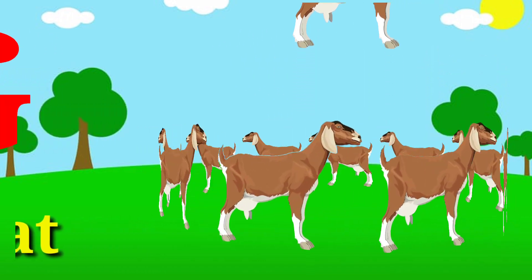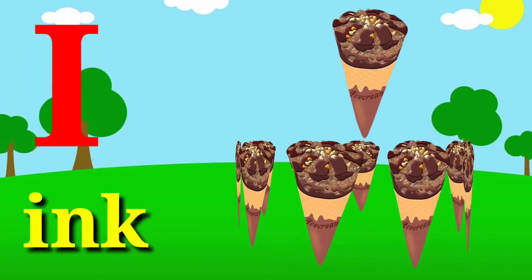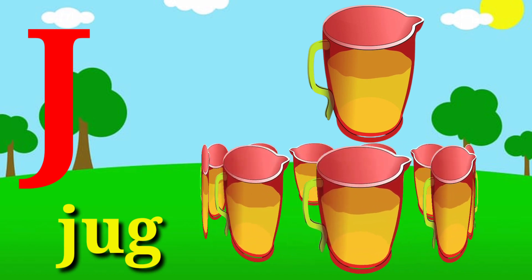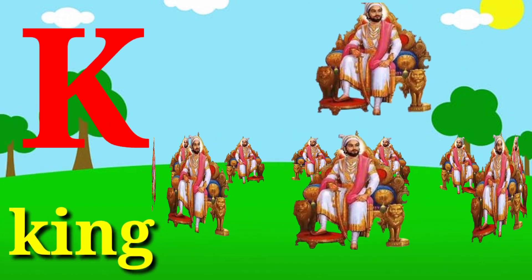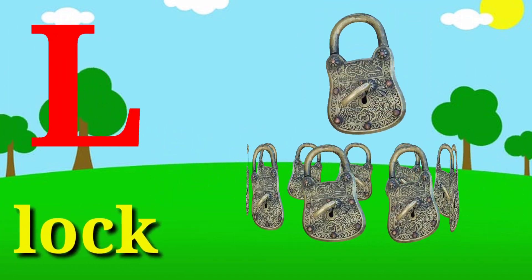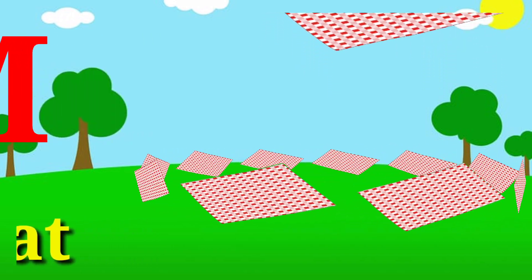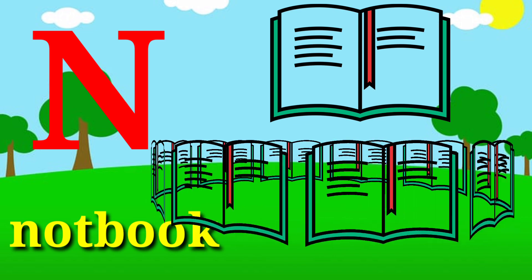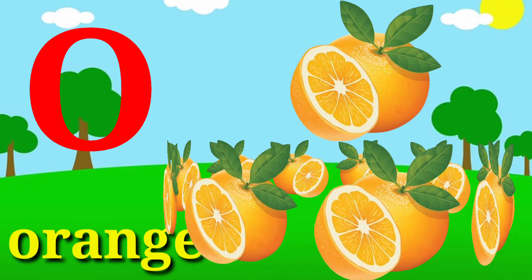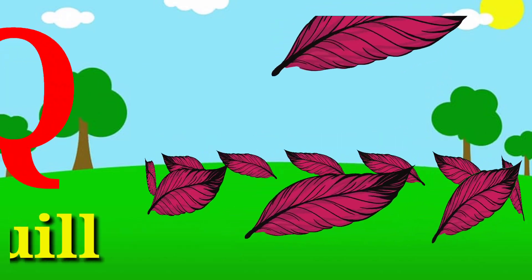G for Goat. H for Hen. I for Ice Cream. J for Jug. K for King. L for Lock. M for Mat. N for Notebook. O for Orange. P for Peacock. Q for Quill.